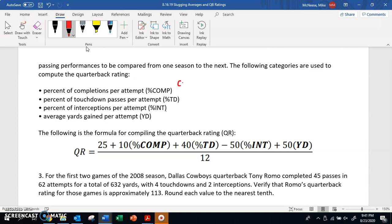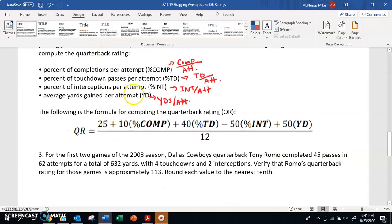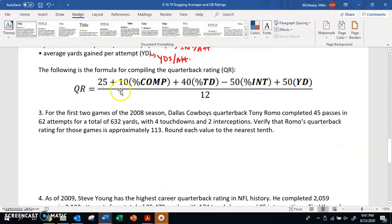I just want to tell you the way you can get these percentages. The way we can get these percentages is by creating a ratio. Percentage completion is just completions divided by attempts. Touchdown passes is just touchdowns divided by attempts. Interceptions is just interceptions divided by attempts. And yards gained per attempt is just yards divided by attempts. Anytime we want to get these ratios, we have to divide using attempts. And then they have a formula for us. QB rating equals 25 baseline plus 10 times their completion percentage, 40 times their touchdown percentage, minus 50 times their interception percentage, plus 50 times yards, divided by 12.